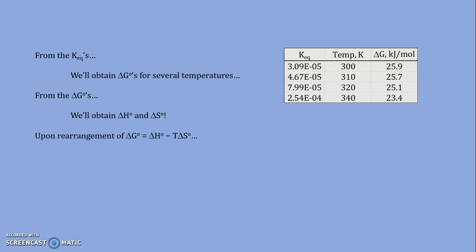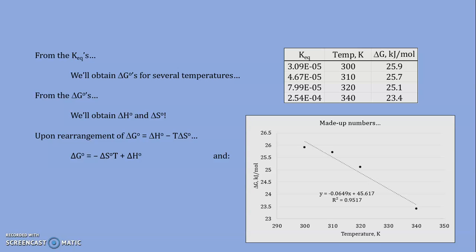We imagine ourselves rearranging the expression. Instead of writing delta G equals delta H minus T delta S, I would write delta G equals negative delta S times T plus delta H. And in this form, we can almost imagine Y equals MX plus B. That is, I can plot the standard free energy change on the Y axis versus the temperature on the X axis. The intercept is delta H, or enthalpy change, here 45.6 kilojoules per mole.